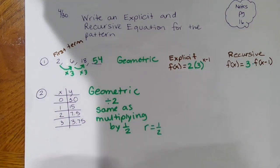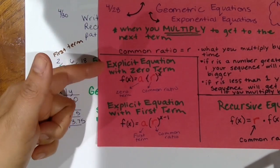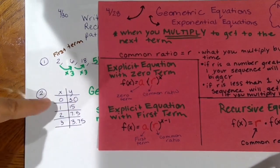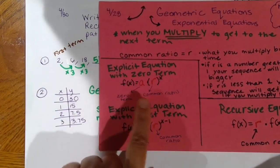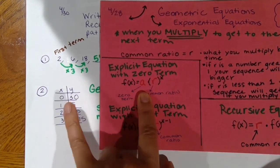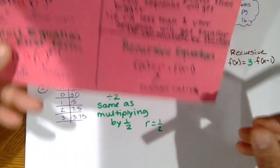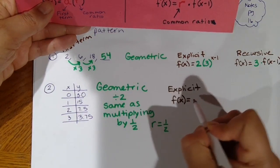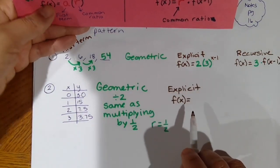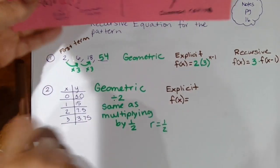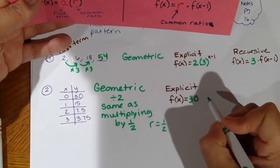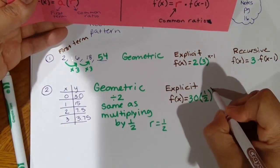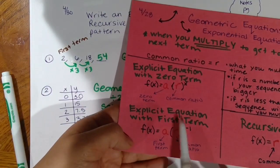Now write the explicit and recursive equations. Looking at the table, they gave me the zero term, so I'll use the explicit equation with the zero term. The zero term is 30 and the common ratio is one-half. So f(x) = 30 · (1/2)^x. Because I used the zero term, the exponent is just x, not x minus 1.